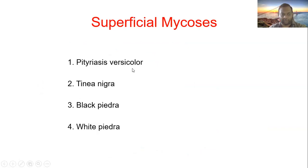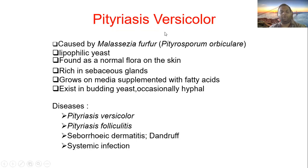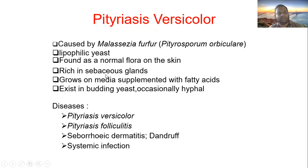The first disease is Pityriasis Versicolor, caused by Malassezia furfur. This organism is a lipophilic yeast found as normal flora of the skin, so it is not contagious and not transmitted to others. It lives in the sebaceous glands because it is lipophilic.